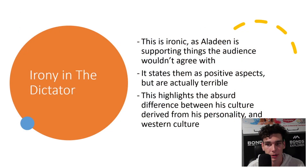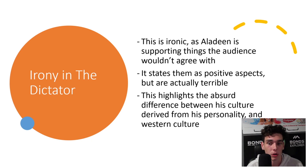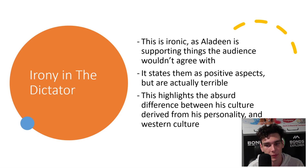This scene is ironic as Al-Adeen is supporting things that the audience would generally never agree with. It states them in a positive light with a positive tone, discussing them as if they were wonderful things, when in fact they're often quite terrible. The things he discusses as being positive include corruption, inequality and human rights violations. This highlights the absurd difference between his personality cult and Western culture, and is supposed to be interpreted as humorous, making fun of dictators being out of touch with regular citizens in society.